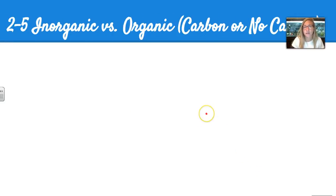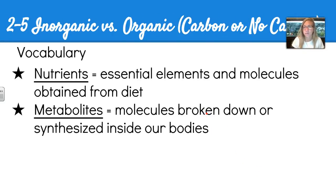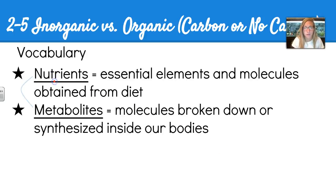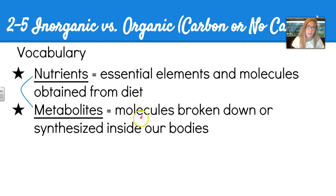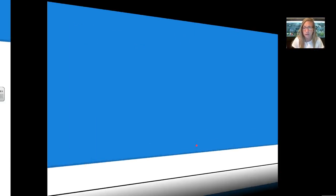Section 2-5 talks about the difference between inorganic and organic compounds — really, carbon or no carbon. Organic means there is carbon; inorganic means there's not. Nutrients are essential elements and molecules obtained from diet, so we have to consume them through food. Metabolites are molecules broken down or synthesized inside our bodies, and they can be inorganic or organic.